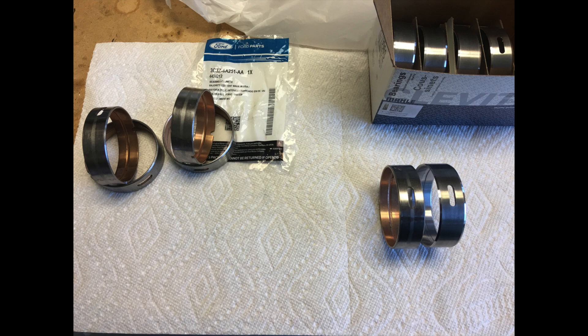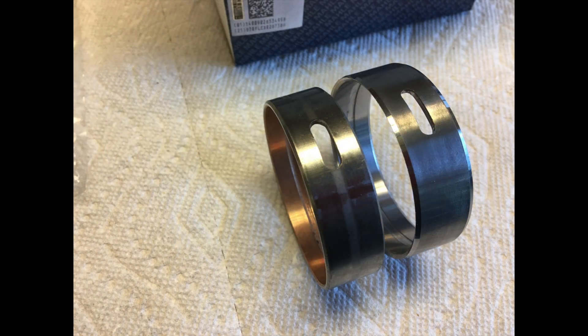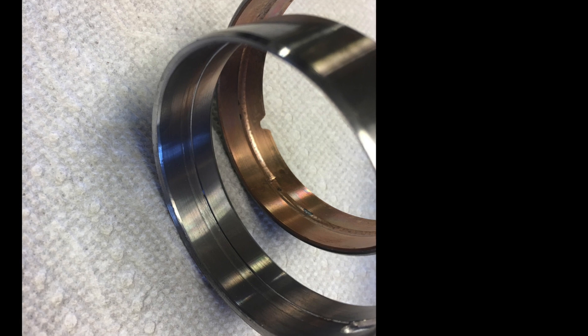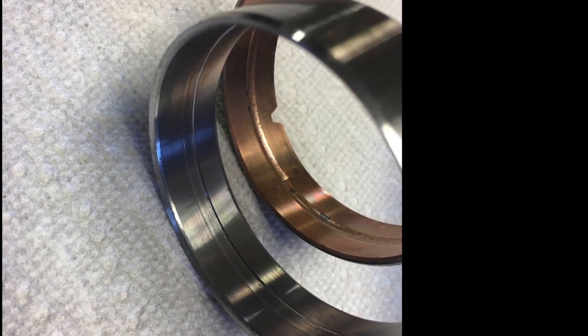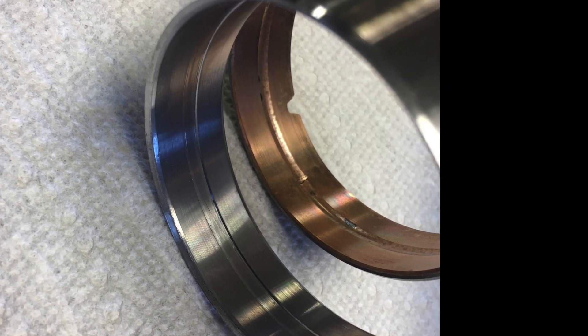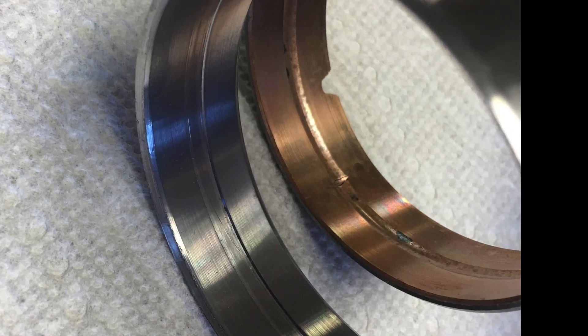I purchased both Navistar OE and Clevite bearings. The companies use different technologies and designs. The oil inlet ports are the same width and length. Navistar uses what appears to be bronze, while Clevite uses an aluminum coating, as stated in their literature.